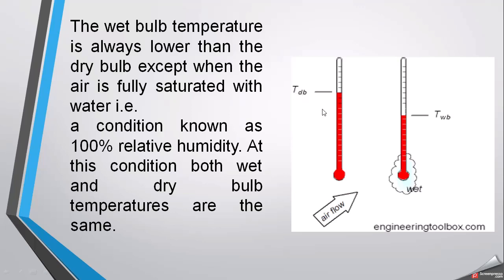Dry bulb temperature is always higher than wet bulb temperature, except in one condition. When the air is fully saturated with water — a condition known as 100% relative humidity — both thermometers read the same value, meaning dry bulb temperature equals wet bulb temperature. So the answer to when both temperatures are equal is: when both thermometers are placed in 100% relative humidity, the readings will be the same.